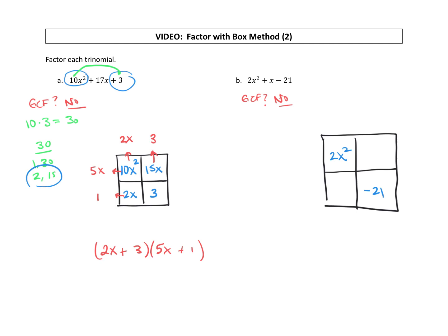Now to fill in our two boxes here, we need to find the factors of a times c that add up to our middle term. So a times c, 2 times negative 21 is negative 42. Factors of negative 42 that add up to our middle term. This middle term is an x, so think of it as 1x.